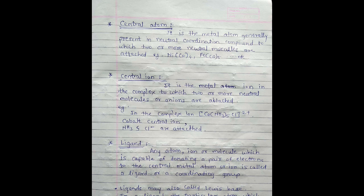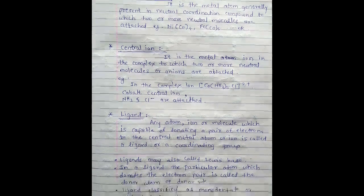Next term is central ion. It is the metal ion in the complex to which two or more neutral molecules or ions are attached. For example, in the complex ion Co(NH3)5Cl^2+,